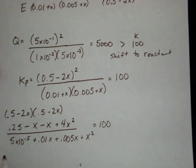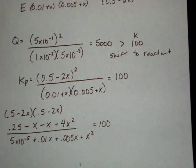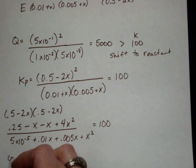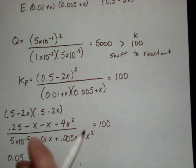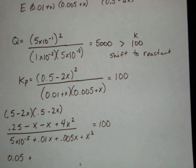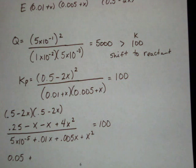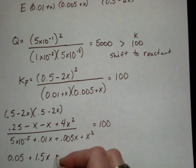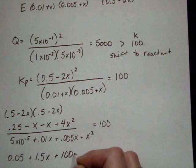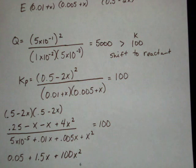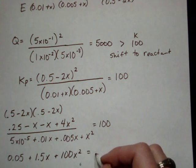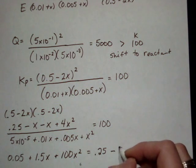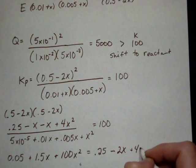Multiply everything through and combine it. That's going to be 5 times 10 to the negative 5 times 100 is 0.05. 0.01 plus 0.005 for the x's times 100 gives me 1.5x plus 100x squared. And then, that's equal to 0.25 minus 2x from the top up here, plus 4x squared.